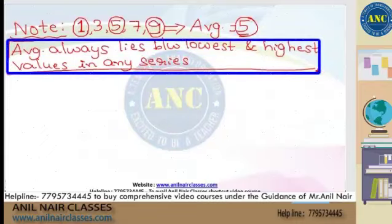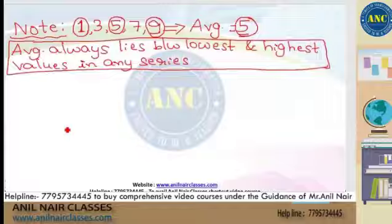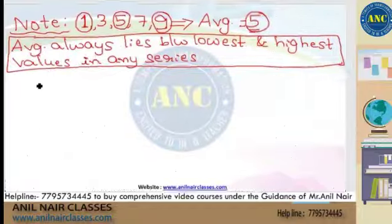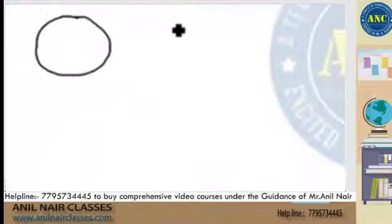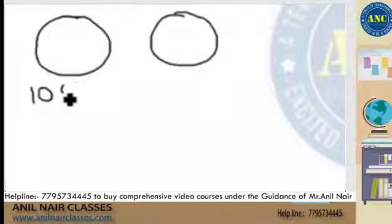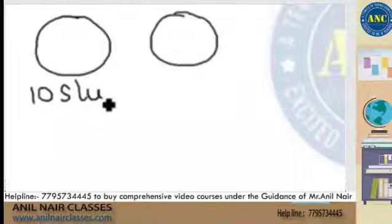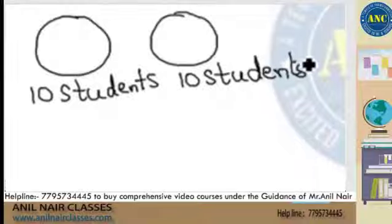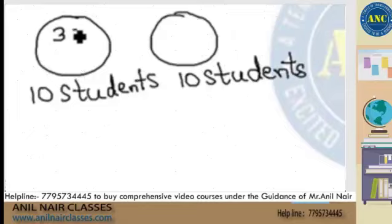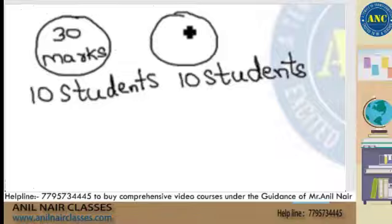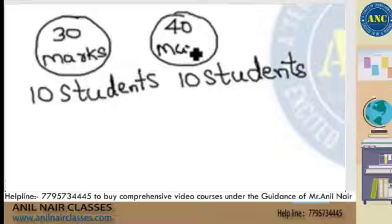This is one of the key points before I start solving the actual question. The another point I want to tell you: assume there are two sections — Section A and Section B. There are 10 students in Section A and 10 students in Section B. The average marks of Section A is 30 marks. Section B average marks is 40 marks.